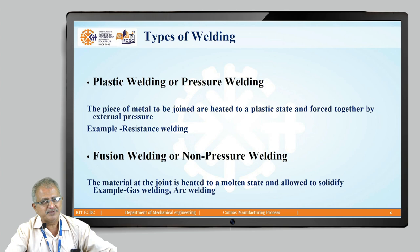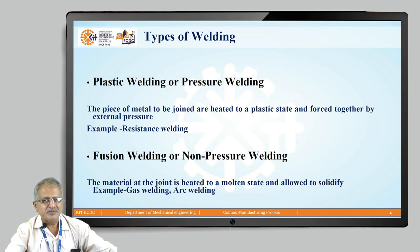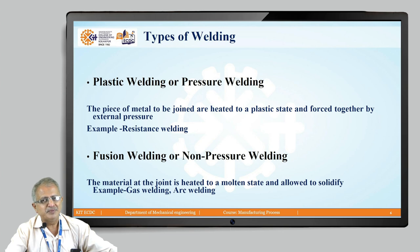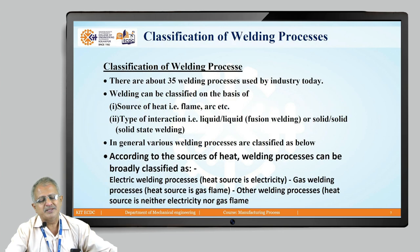One is plastic welding or pressure welding, in which the pieces of metal to be joined are heated to a plastic state and forced together with the application of pressure. An example is resistance welding. The second type is fusion welding, where the material is heated, allowed to solidify, and filler material is added. Examples of fusion welding are gas welding and arc welding.